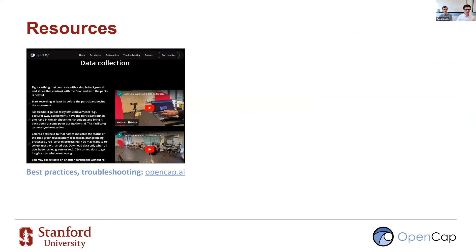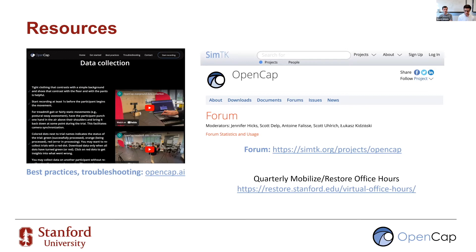We recommend checking out OpenCAP.ai, which has getting started information, best practices, troubleshooting, and tutorial videos. If things aren't answered there, ask questions on our forum at simtk.org — search OpenCAP, find our page, and click on the forum. Chances are someone else has already asked your question and we've answered it. If not, post it so we can answer it for everyone's benefit. We also conduct quarterly office hours through the Mobilize and Restore Center for questions specific to your research question or project setup.